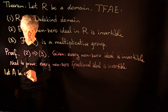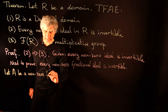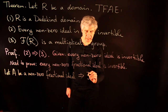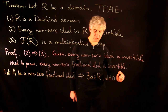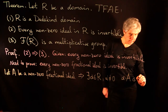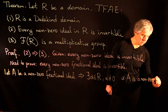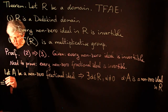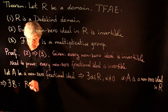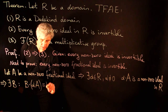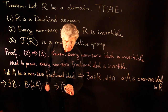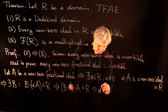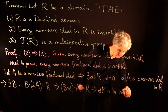Let A be a nonzero fractional ideal. By definition of a fractional ideal, there exists a nonzero α in R such that α·A is a nonzero ideal in R. By our assumption, every nonzero ideal is invertible, so there exists a fractional ideal B with B·(α·A) = R. This can be written as (B·α)·A = R, so αB is the inverse of A.